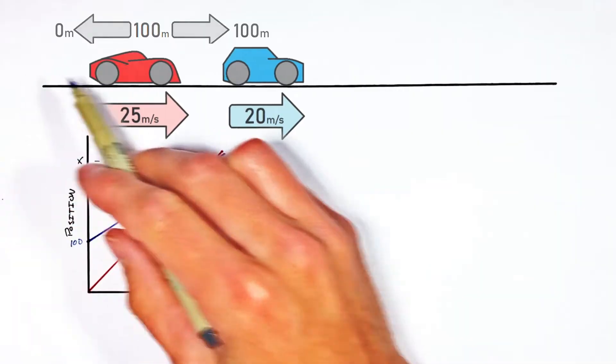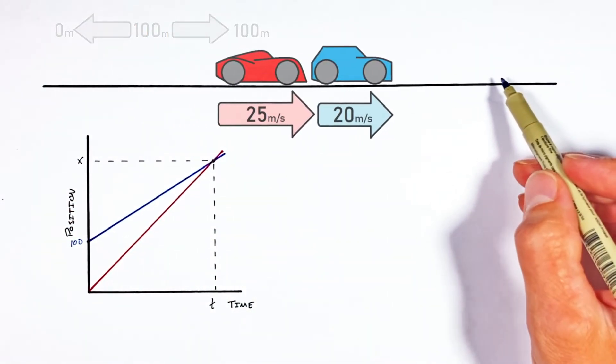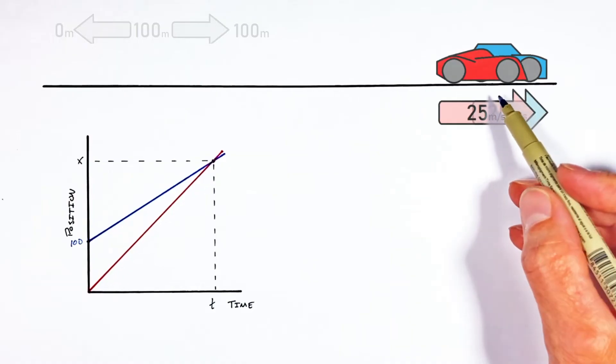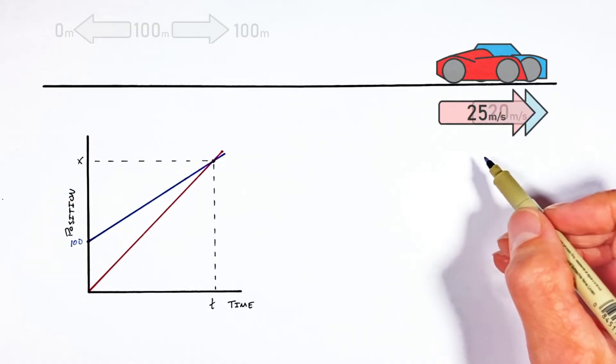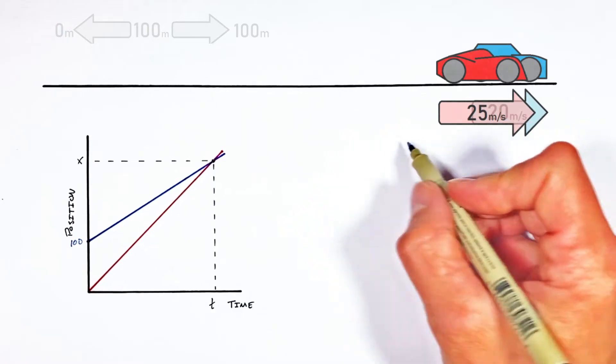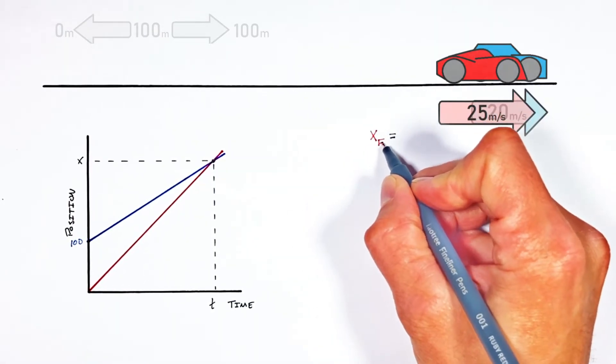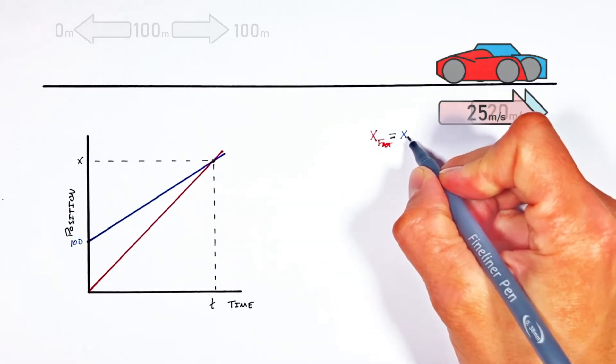Now it might seem somewhat obvious that when the faster car catches the slower car over here, they're going to be at the same position. But what's not typically obvious is mathematically how we represent that. So literally what we're going to do is equate the position of the fast car to the position of the slow car.